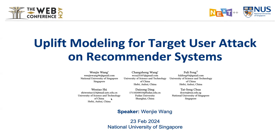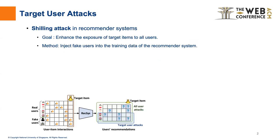I will present our web conference paper about uplift modeling for target user attack on recommender systems. Shilling attack aims to enhance the exposure probability of the target item to all users. It is achieved by injecting some fake users into the training data of the recommender system, so as to increase the recommendation probability of the target item to all real users.